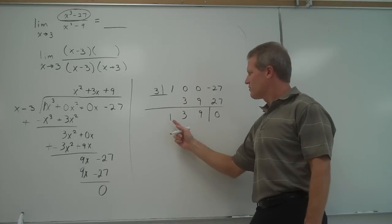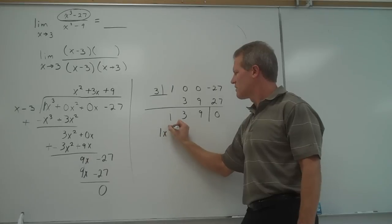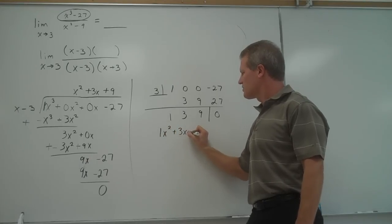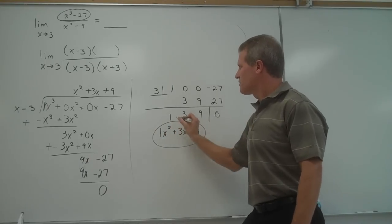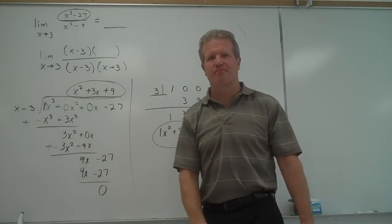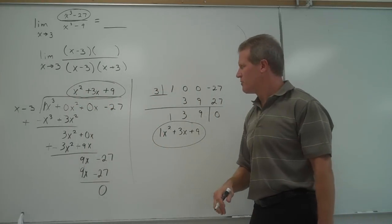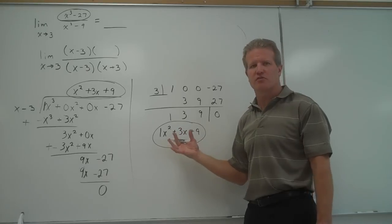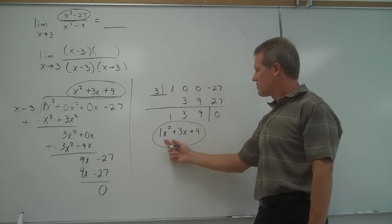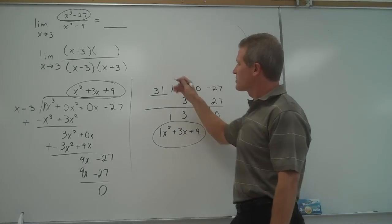This gives me an answer of 1x squared plus 3x plus 9. The exact same thing I got using long division. You can use either method. It doesn't matter. Synthetic division is probably quicker and easier if you remember how to do it. So anyway, the missing factor is x squared plus 3x plus 9.